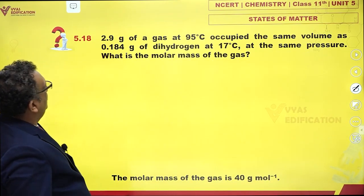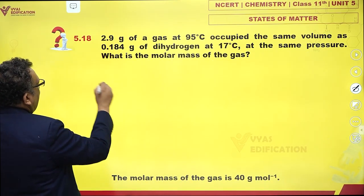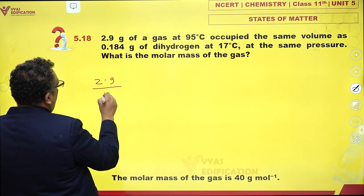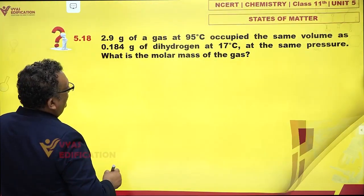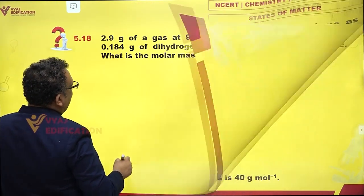Mass, how much is mass? Mass is 2.9 grams by molar mass, we have to find out. Temperature was 368 Kelvin.